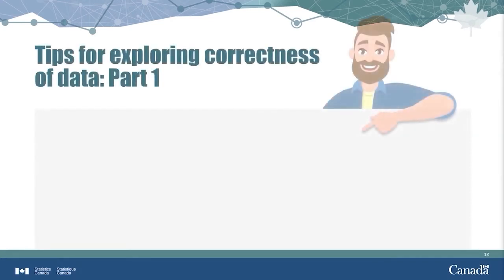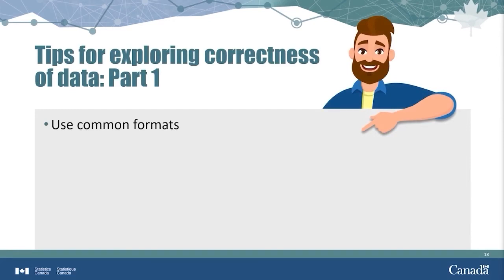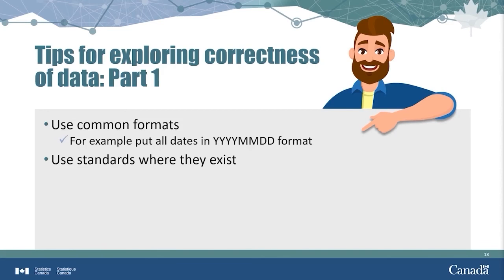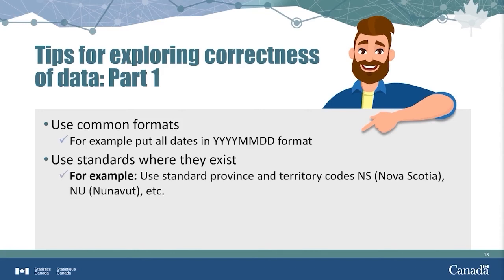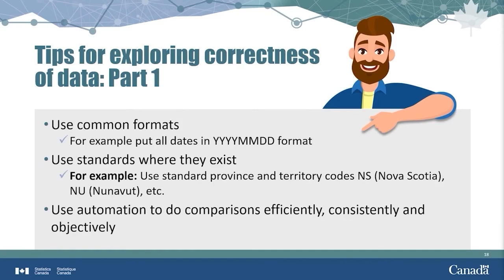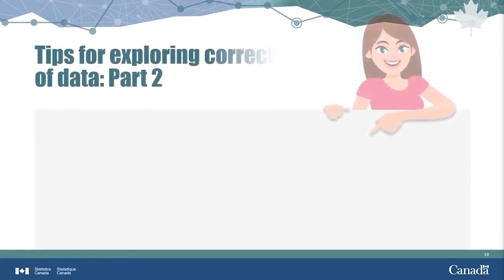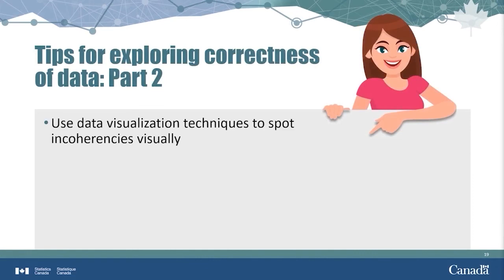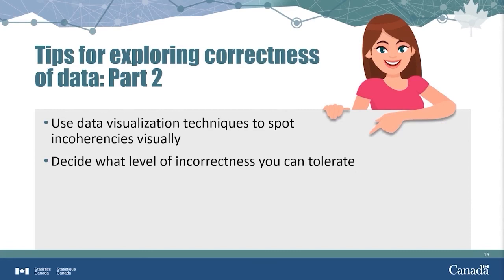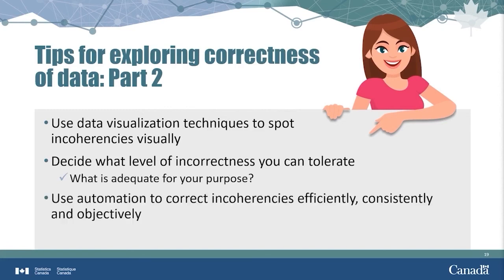Here are some tips to make comparisons easier. Before trying to compare data values, put them into a common format. For example, the 12th of June 2018 will look different if the month is listed first in one case and the day is listed first in another. As well as using standard formats, use standard abbreviations, concepts, and definitions to the extent possible. For example, in Canada, we have a standard two-letter code for the names of all the provinces and territories. Using data visualization is a great way to spot anomalies in data. Before you get started, think about what level of incorrectness you can tolerate in the data — what's adequate for your purpose? Once you find discrepancies, use automation to correct errors in an efficient, consistent, and objective manner.